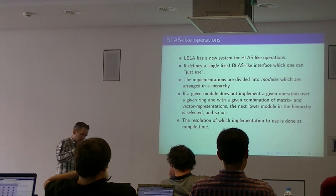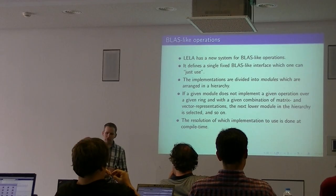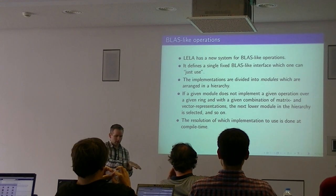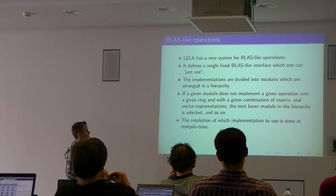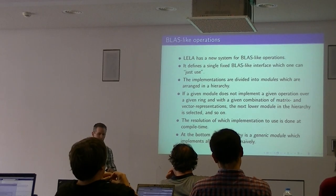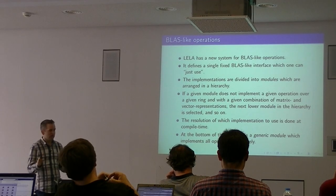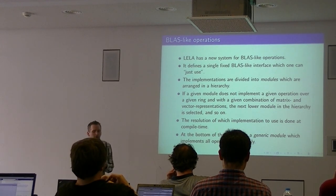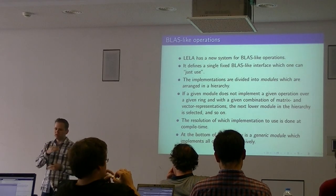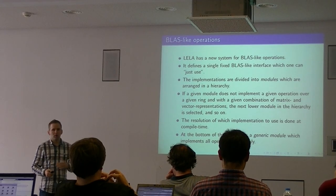When one compiles a program using Layla with all optimizations enabled, what should appear in the final output code is essentially a direct call to the most efficient method available. At the bottom of the hierarchy, there is a generic module which implements absolutely everything for every possible compatible combination of inputs, using the simplest possible naive methods. So it's not fast, but it is a fallback that will be available if everything else fails.